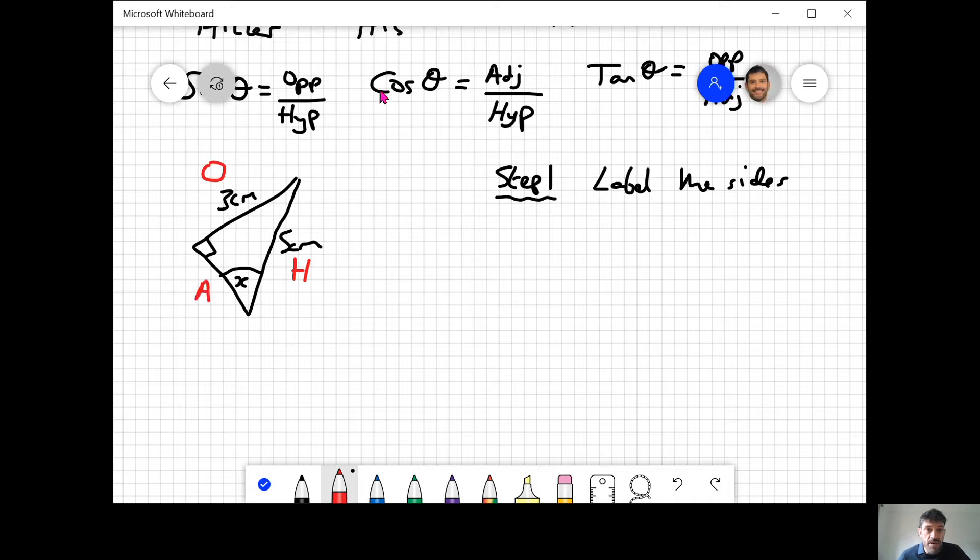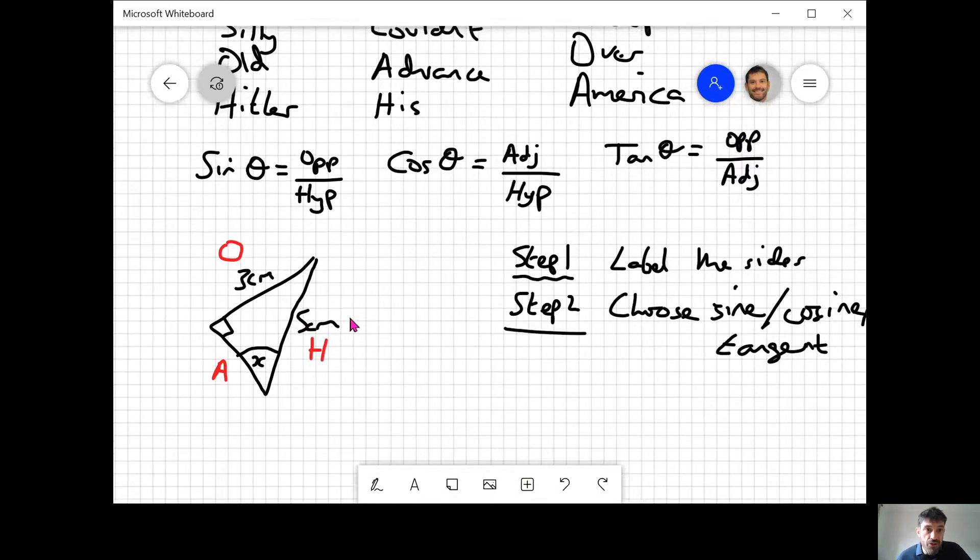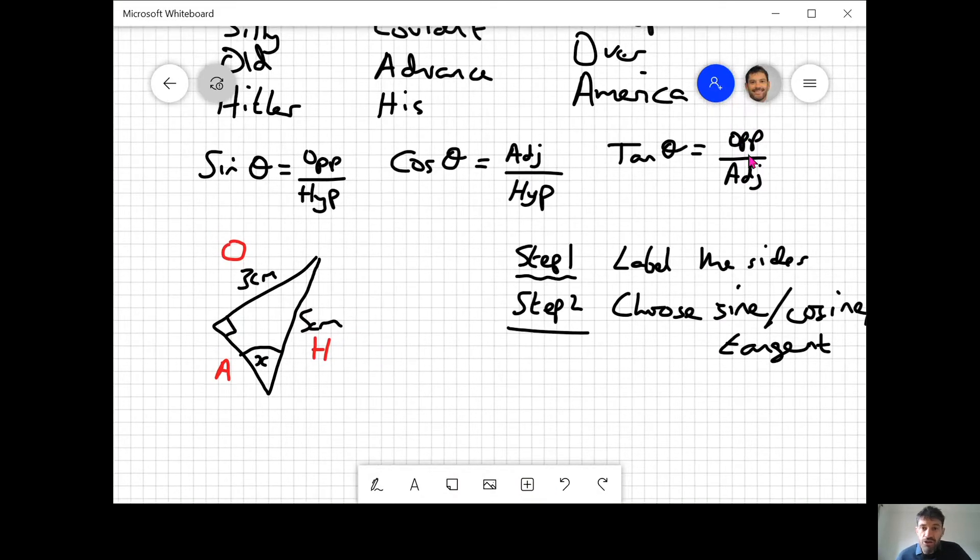We're going to have three bits of information for any trig question: an angle and two sides. We can ignore adjacent because we're not given it. Step two: choose sine, cosine, or tan. We're using O and H, so we're going to use sine. If it was A and H we'd use cos, and if it was O and A we'd use tan.